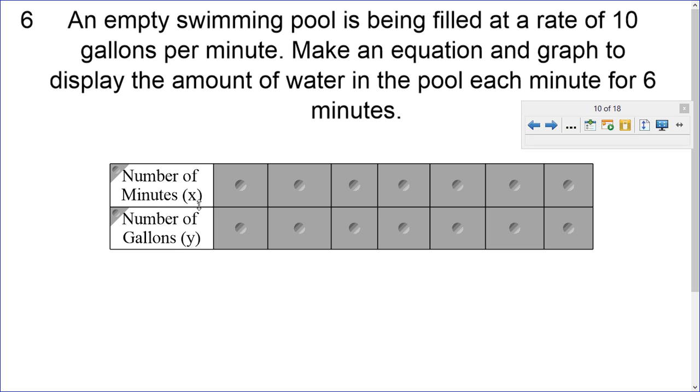How do they relate? Well, x is the independent variable comes first and y is a dependent variable. Why is x independent? Because it's doing its own thing. Whereas y, the number of gallons in the swimming pool depends on how many minutes you fill it up.